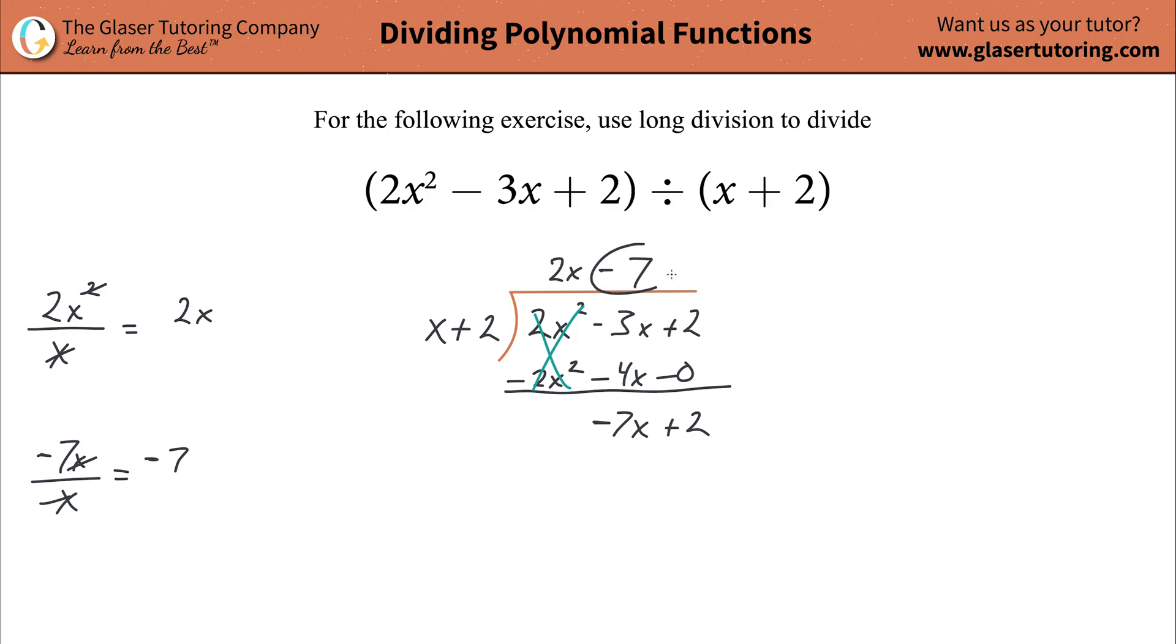So after we have now this term in the quotient, what we're going to do is take that term and then distribute it to each of the terms in the divisor. So negative 7, you're going to take that and you're going to distribute it.